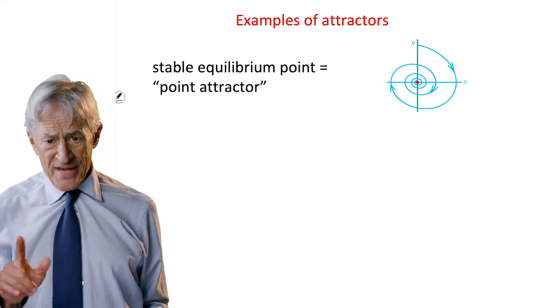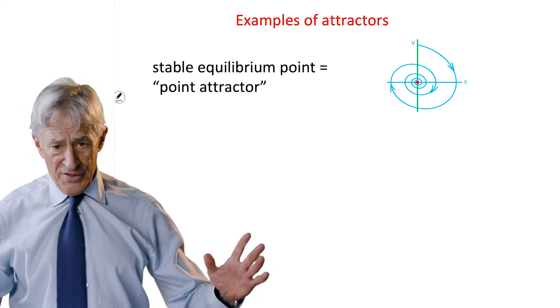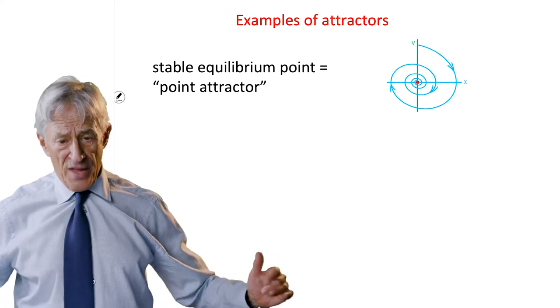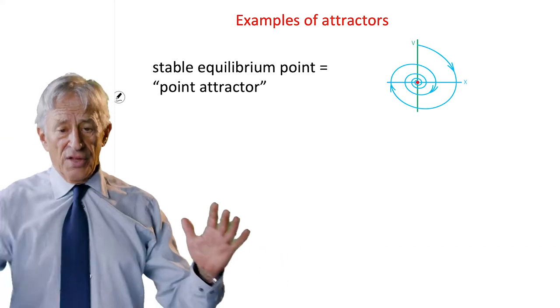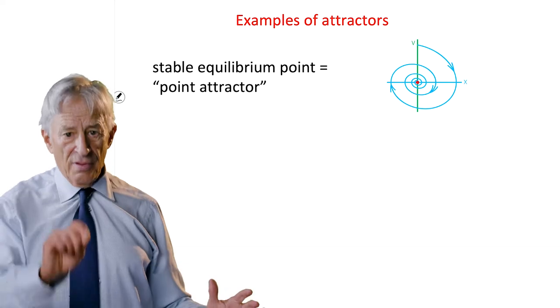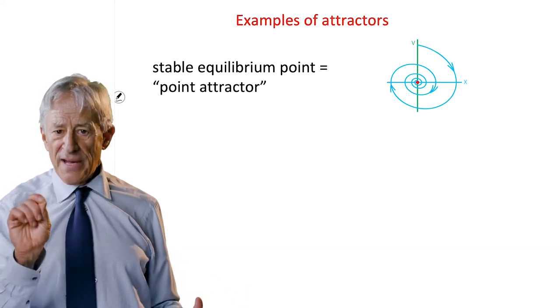In this case, the neighborhood is the whole space. Every point approaches that zero, zero asymptotically.